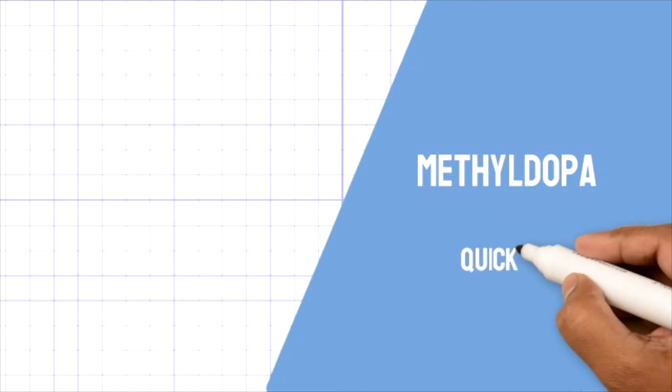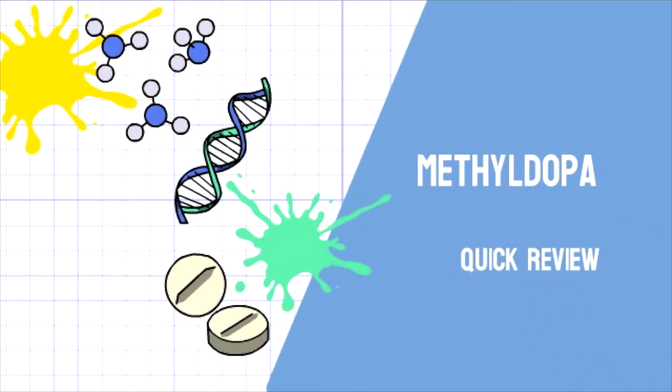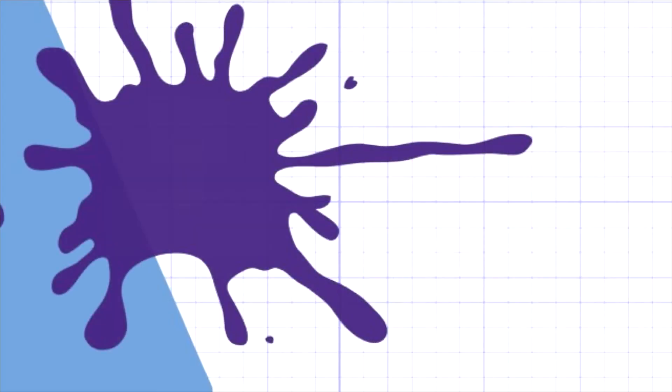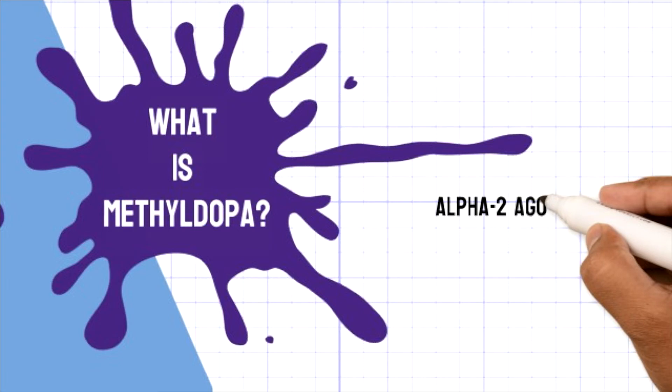In this video, we are going to see a quick review of the drug methyldopa. So let's get started. What is methyldopa? Methyldopa is an alpha-2 agonist and is clinically used in hypertension in pregnancy.